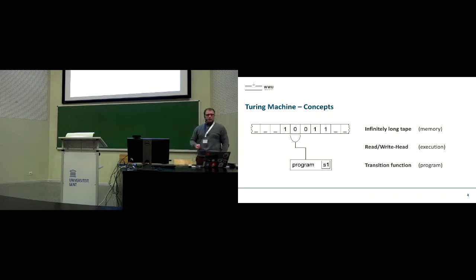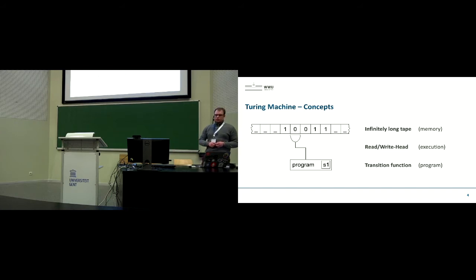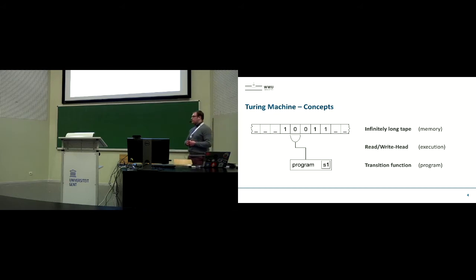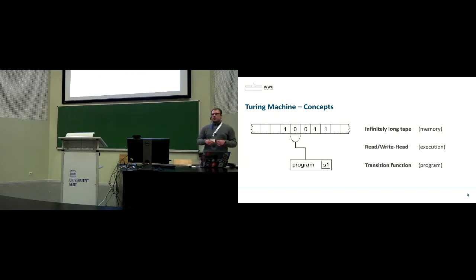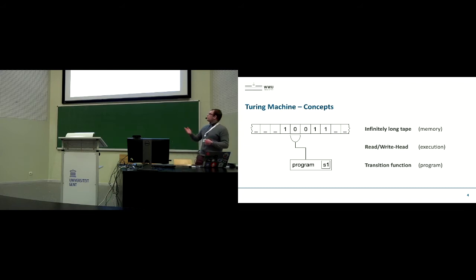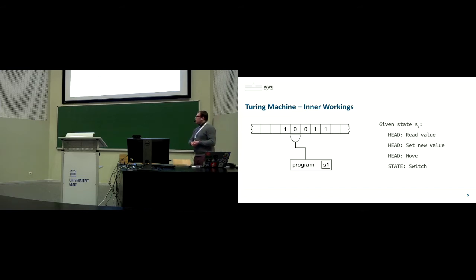You have an infinitely long tape with different cells and an alphabet where each cell holds a symbol — for instance, ones and zeros, or any symbol like A, B, C. There is also a special blank symbol, represented by an underscore. Then you have a read and write head, which is basically what executes your program. The head can read the current symbol — in this case, one or zero — and it can write a symbol.